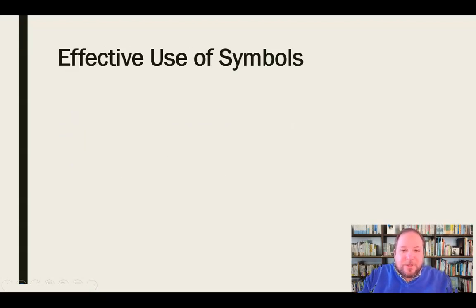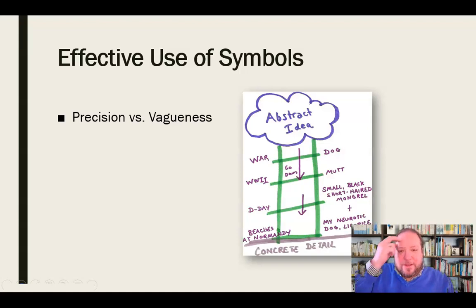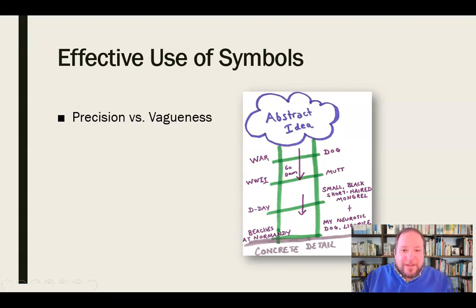So what are some effective uses of symbols? What are some ways we can use symbols effectively in our efforts to persuade? First, we can understand the difference between precision and vagueness. We can use language with the specific amount of precision or vagueness that we need — what we sometimes call the ladder of abstraction. We need to be intentional about this. If we want somebody to have a very specific understanding, we should use precise language. If we're trying to be a little more in the gray area, we can choose vaguer words. We also need to understand when others are using precision versus vagueness and what that may imply.